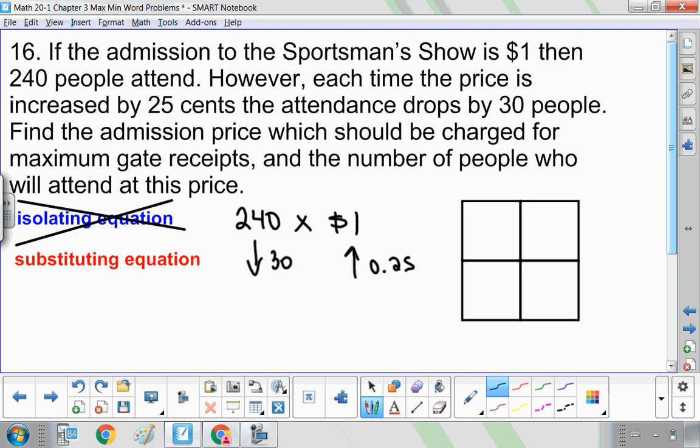So even though they're losing people, they're still making the maximum profit. So the people are decreasing by multiples of 30, so 30X. The admission is increasing by multiples of 0.25X. So X is the number of price increases.